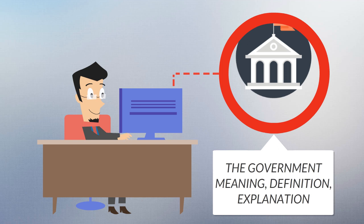The main aspect of any philosophy of government is how political power is obtained, with the two main forms being electoral contest and hereditary succession.